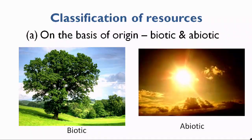Now, coming to the classification of resources. We have different bases on which resources can be classified. The first basis is on the basis of origin — whether they are biotic or abiotic. As you can see on screen, biotic resources include plants, animals, and human beings — all living organisms. Solar energy, on the other hand, is an abiotic resource, as it is not a living thing.